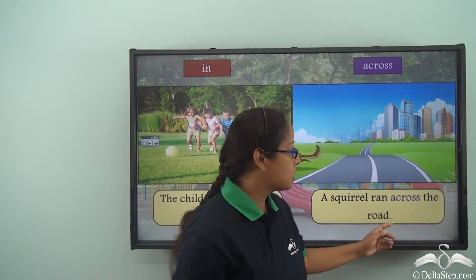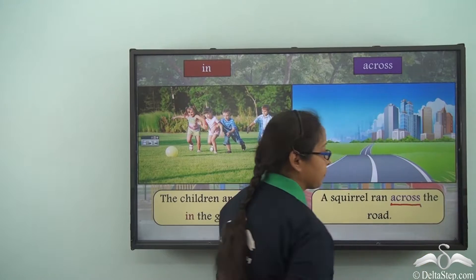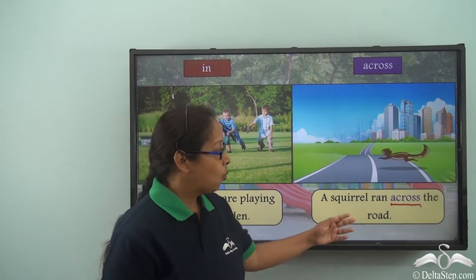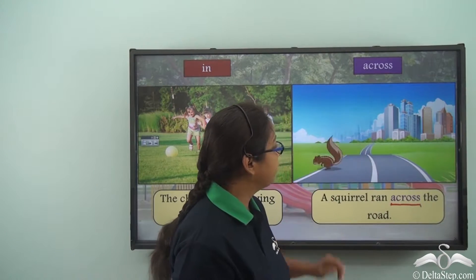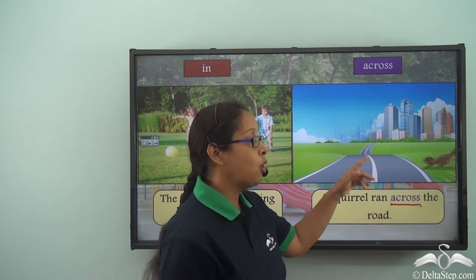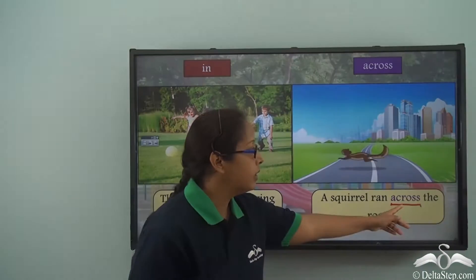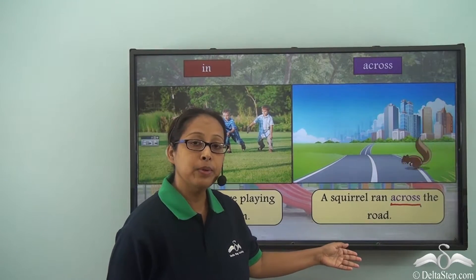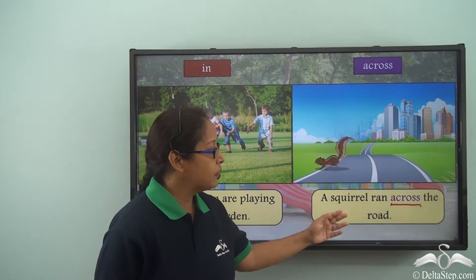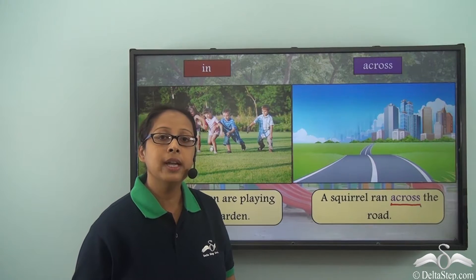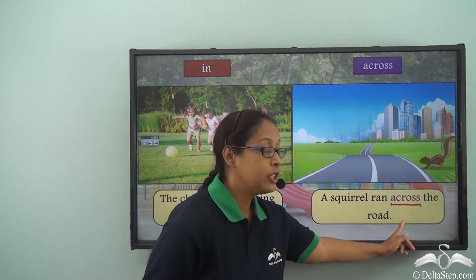A squirrel ran across the road. The preposition is 'across' — it means to cross over. We can see how the squirrel is running from one end to the other, crossing over from one side to the other. We cannot use 'on' here because 'on' would mean something at rest on the surface. The moment we use 'across', we are talking about movement from one side to the other.